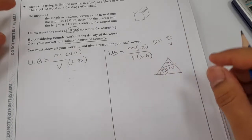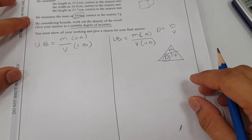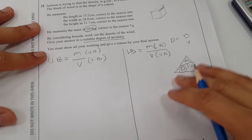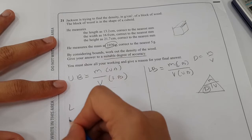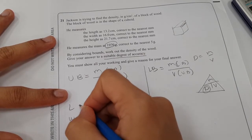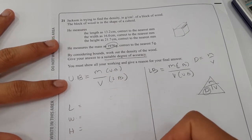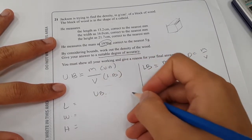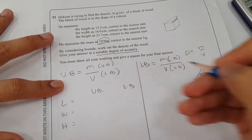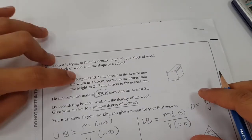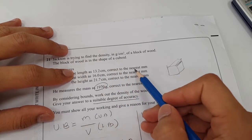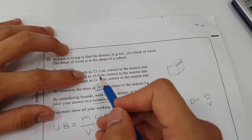The next thing we have to do is find the upper bound and lower bound of each of the following information. We have the length, the width, and the height. So we just need to write the upper bound and lower bound over here. Let's start with the length. The length is 13.2 cm correct to the nearest millimeter.